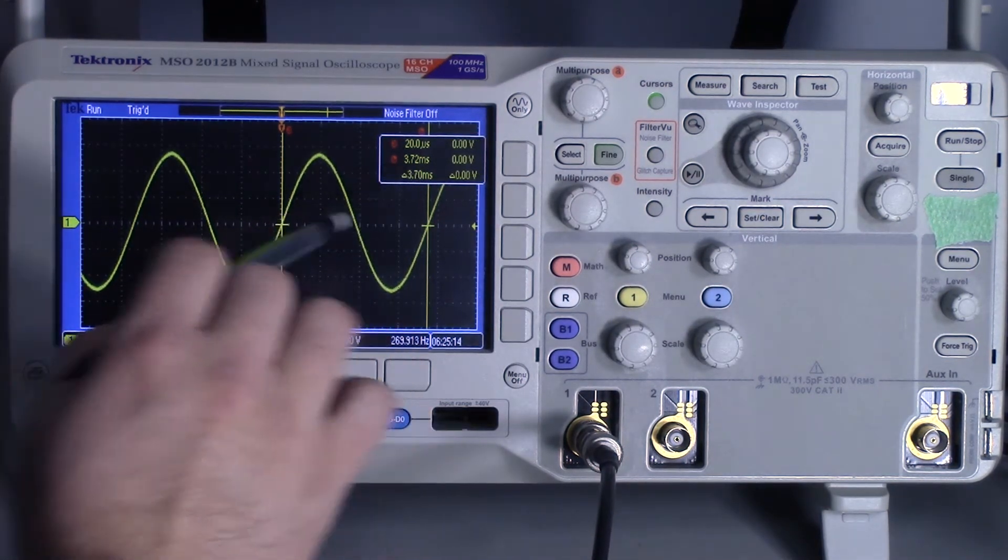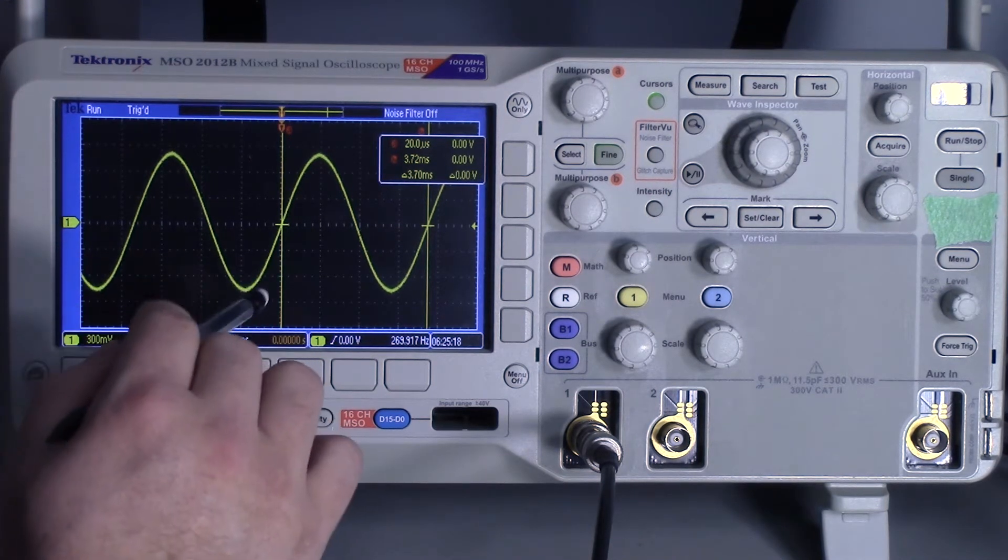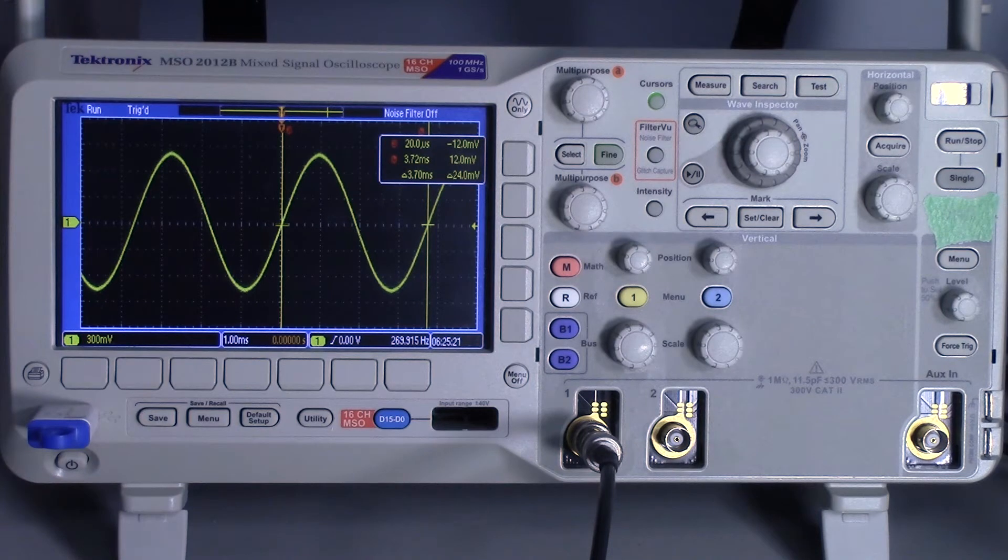And here it tells you various bits of information. So it will tell you that the period is 3.7 milliseconds. So it's obviously going to be a shorter period than we had before, 4 milliseconds. So you can say the frequency is going to be higher.